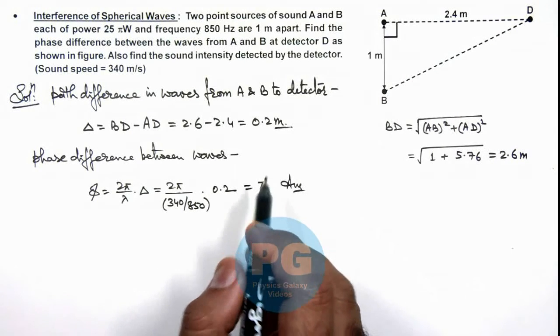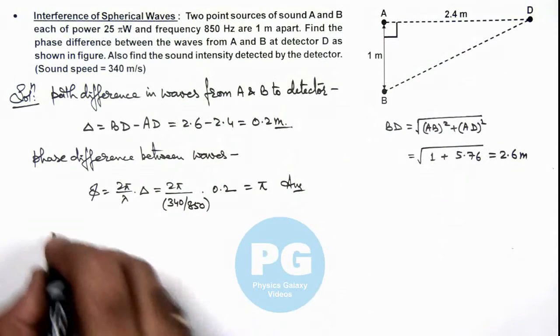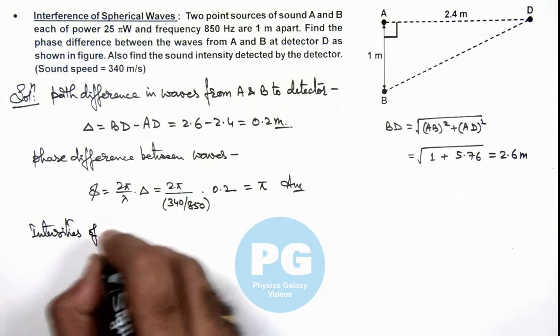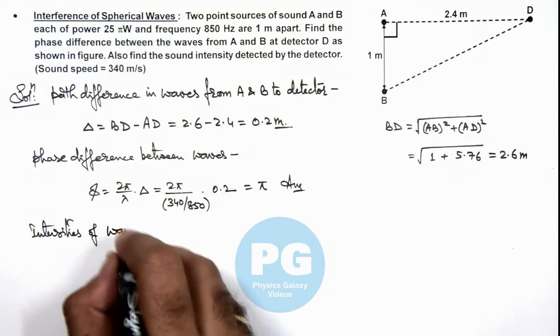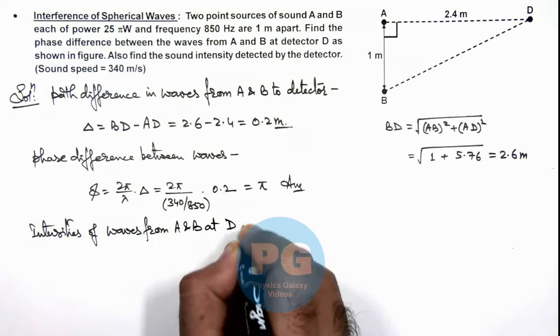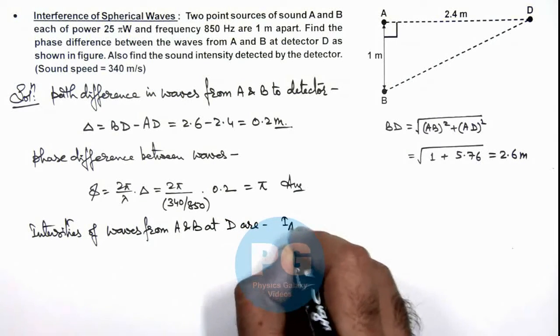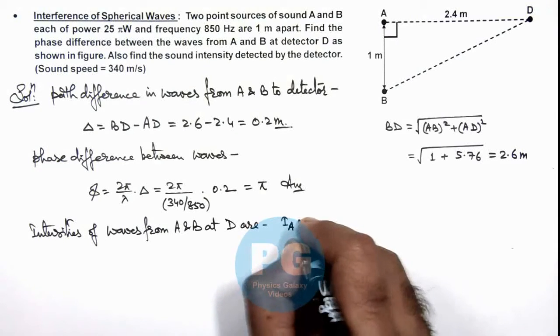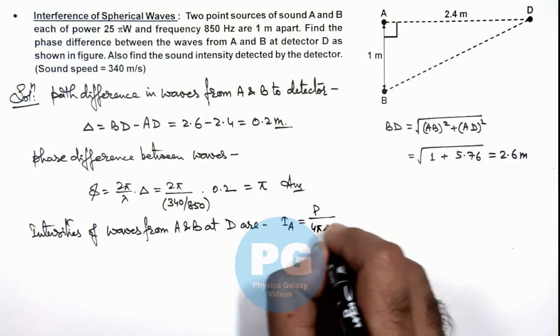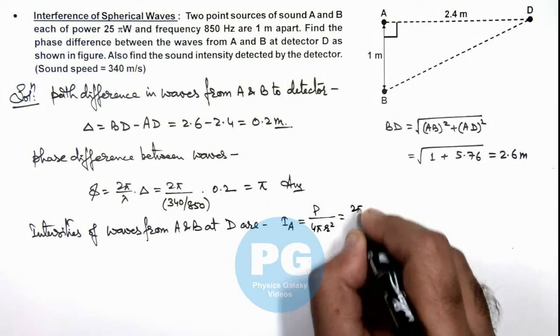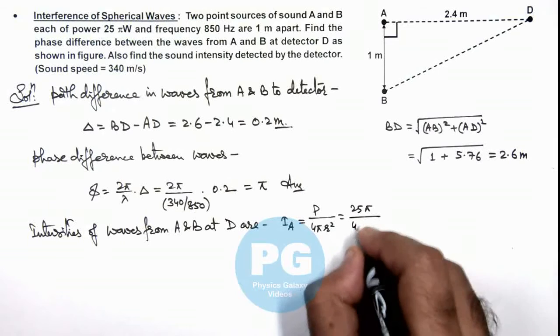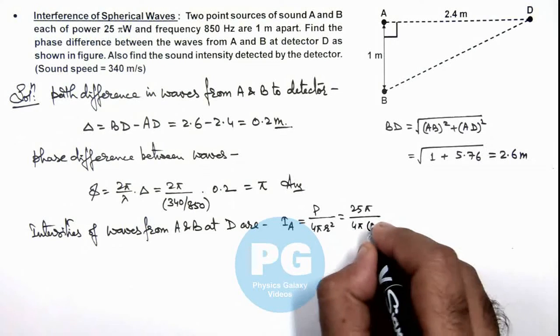If we wish to find the sound intensity at detector, first we calculate the intensities of waves from A and B at D. Here we can write intensity at detector due to A as P/4πr². So we can substitute power as 25π watts divided by 4π, and the distance is 2.4 whole squared.